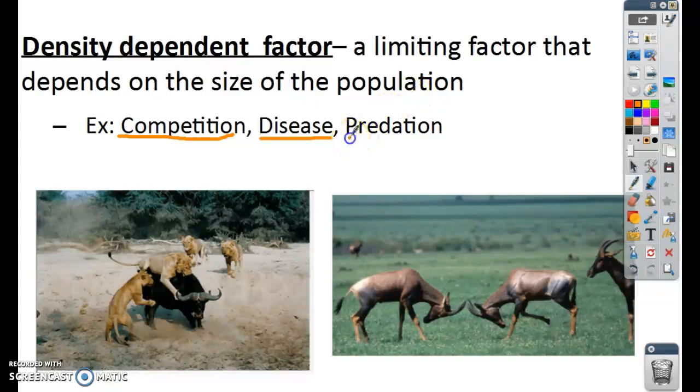And then predation, so predators and prey. When the predators eat more prey, the prey population goes down. And then because the prey population goes down, there's less food, so then there's fewer predators. So they influence the size of each other's populations. So these factors limit populations, and they have more of an influence when we have bigger populations. That's what density-dependent means.